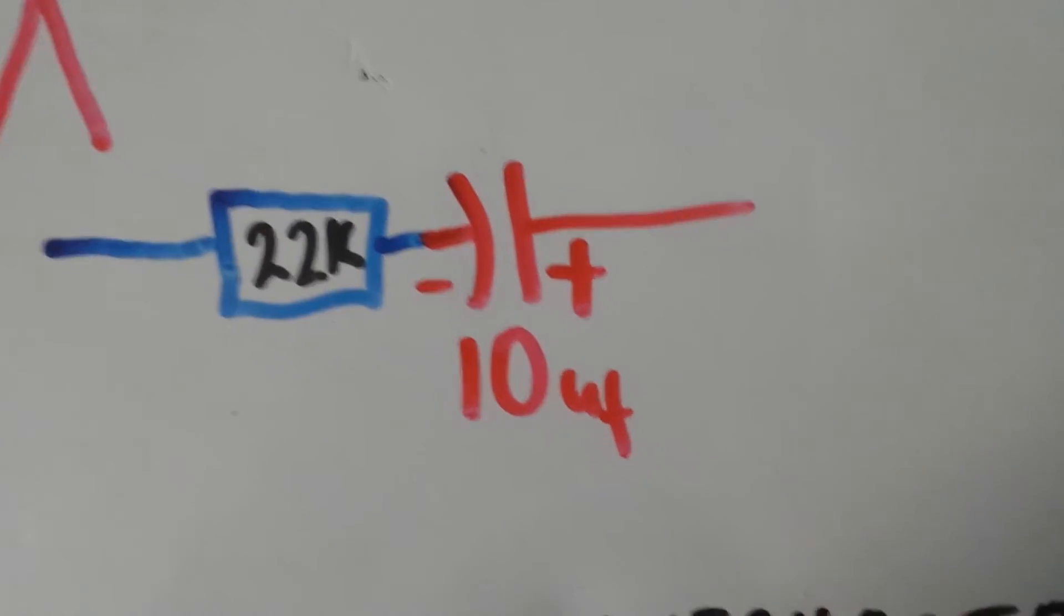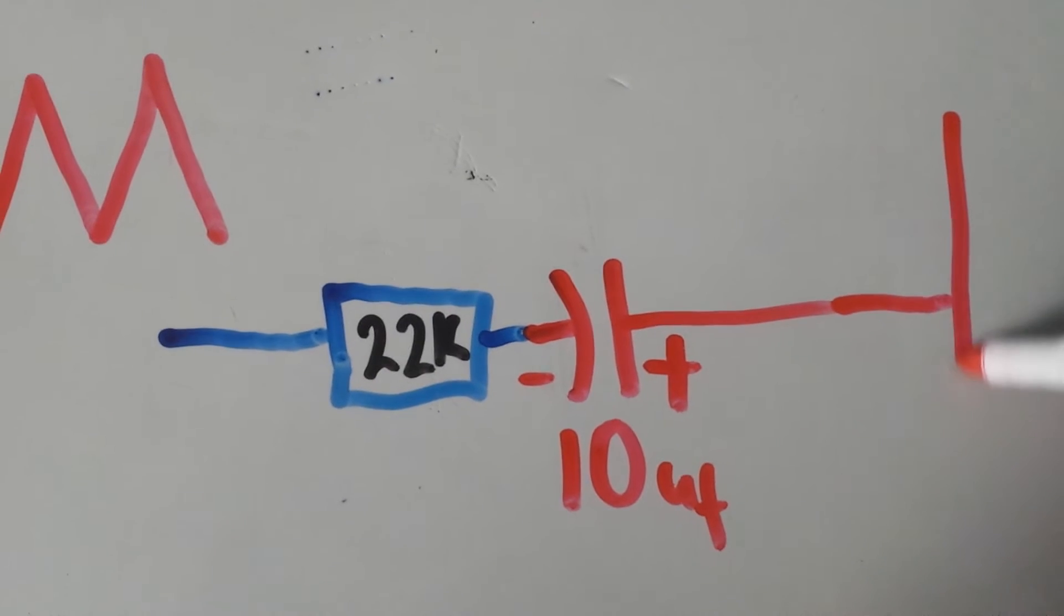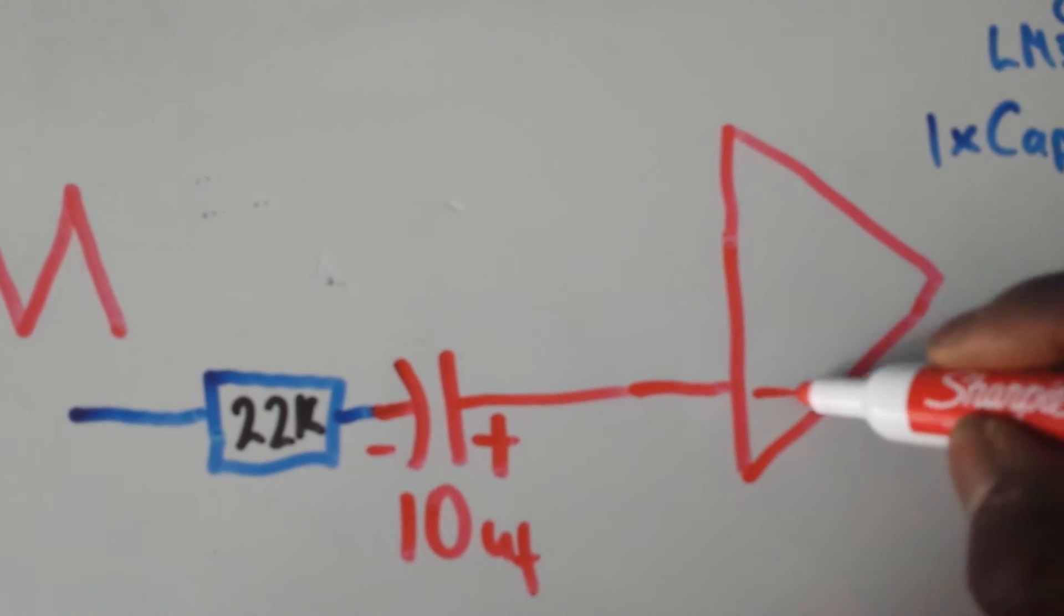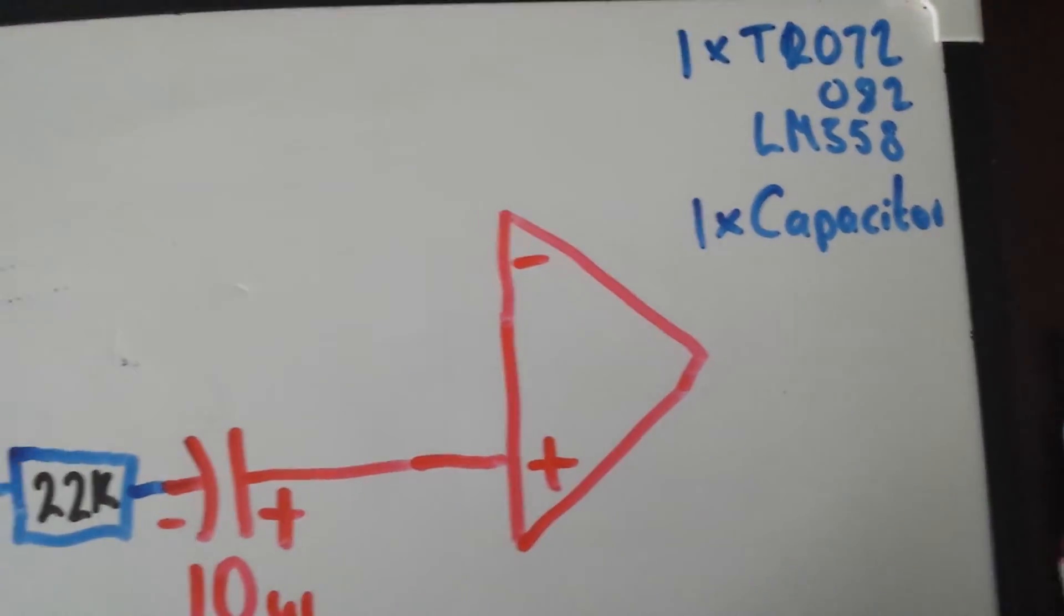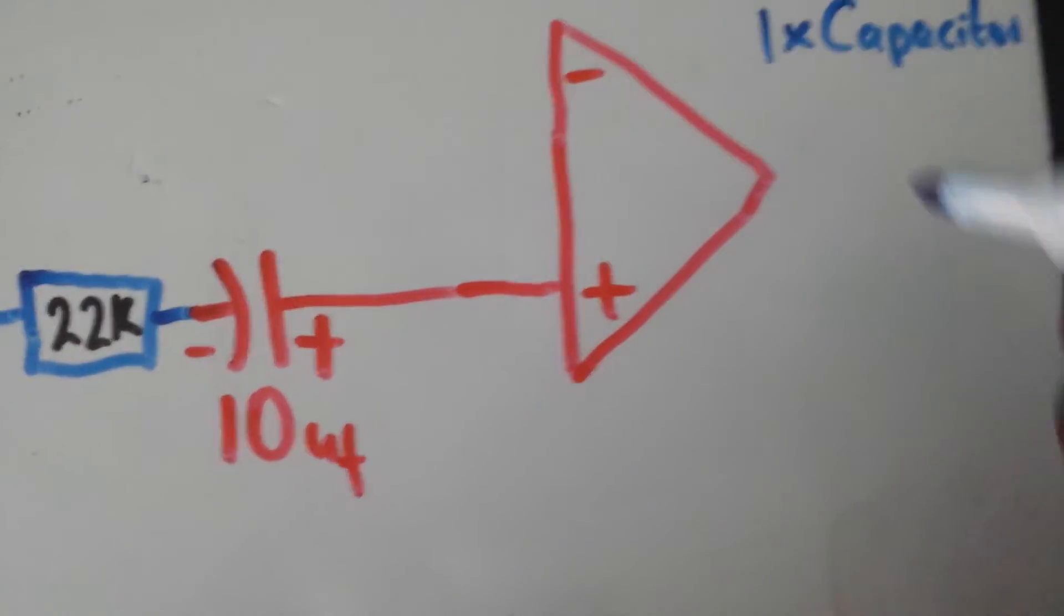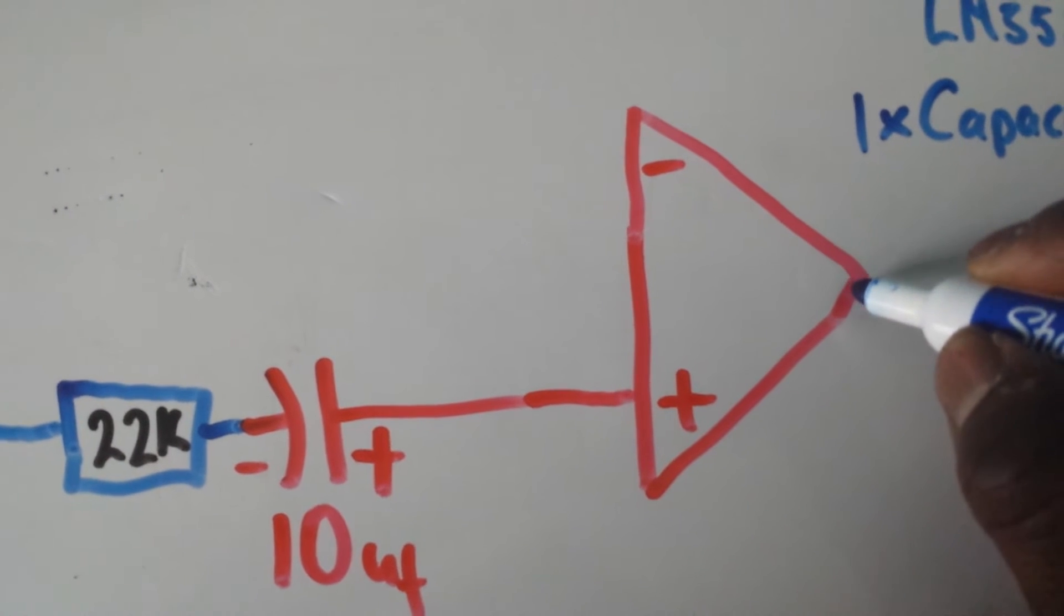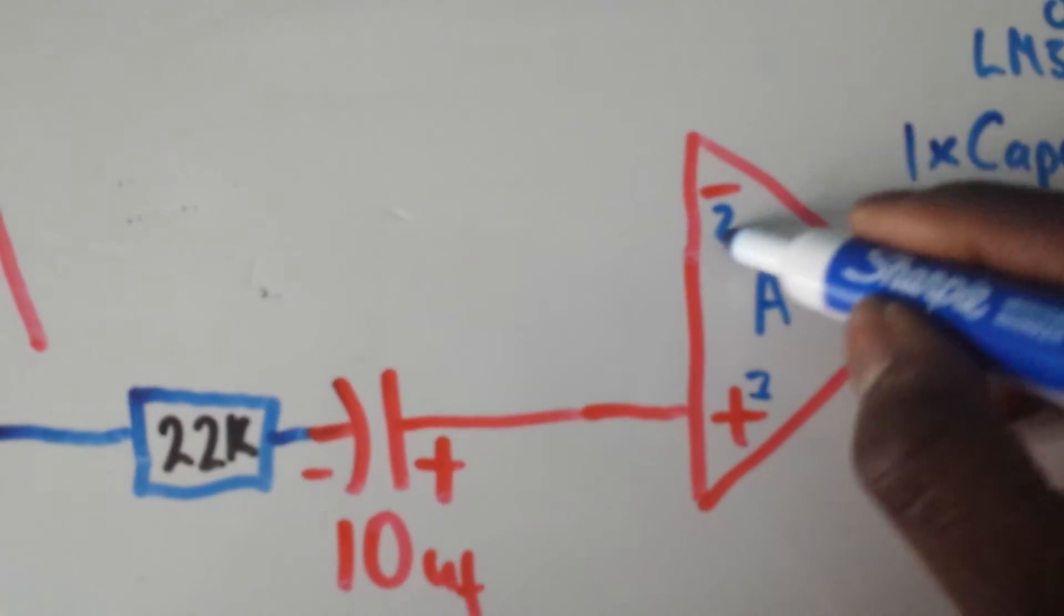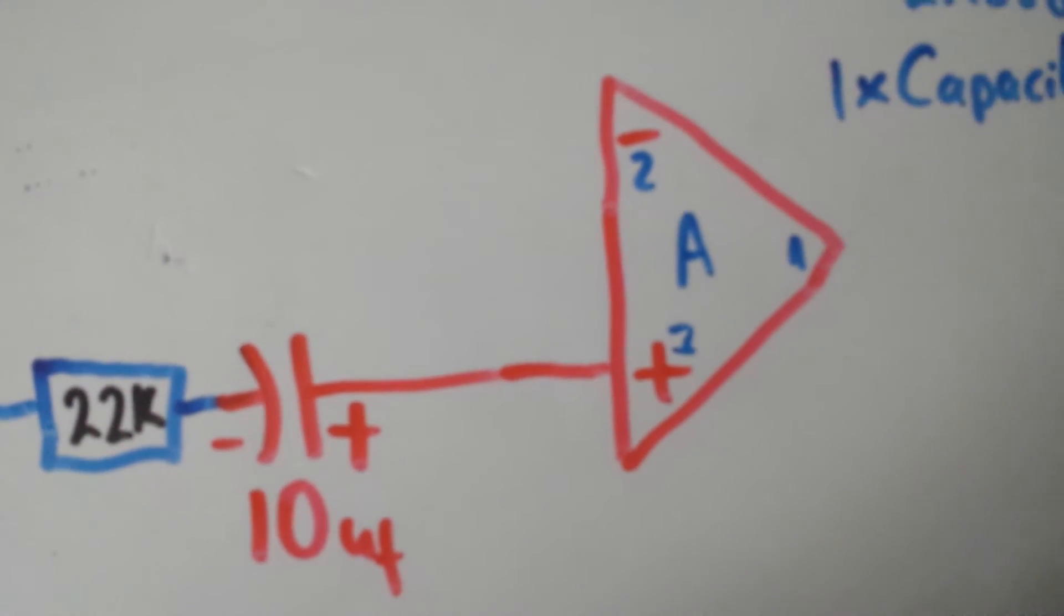What we need to do next is take this into the non-inverting side of our operational amplifier, which will be known by a plus symbol. If you don't know the pinouts, pretty much all standard dual operational amplifiers have exactly the same pinouts. Google image pinouts if you're unsure. If you have an IC chip, try not to get it the wrong way around or it may go bang. This is op amp A of our TL072 or LM358, and we have our non-inverting side.